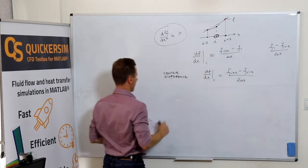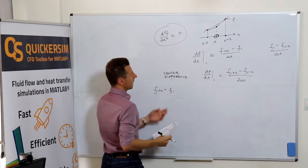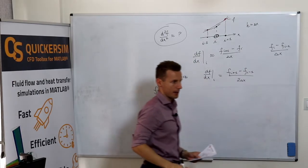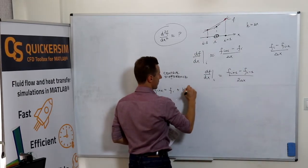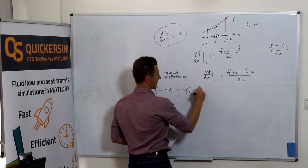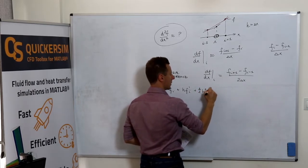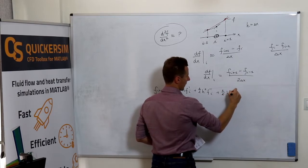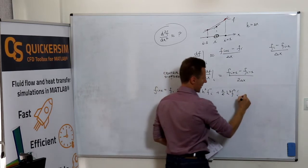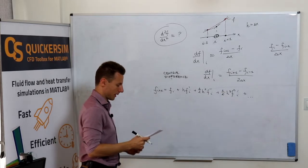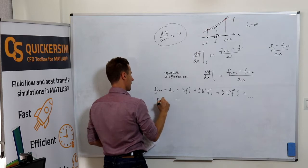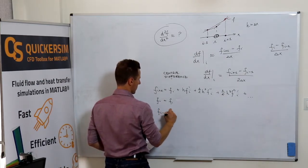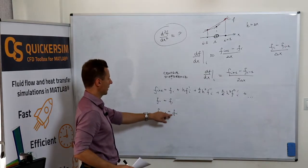The consistent procedure is: let's write the Taylor expansion series for the function value at node i plus 1. This one is f_{i+1} equals f_i plus h times the first derivative at i, plus one half h squared times the second derivative at i, plus one sixth h cubed times the third derivative at point i, et cetera. Let's write f_i, which is just f_i.